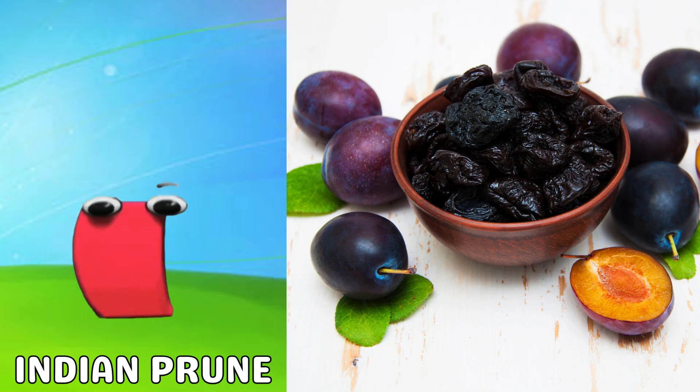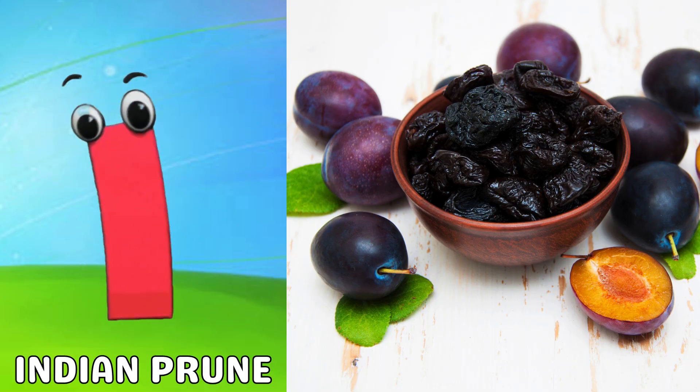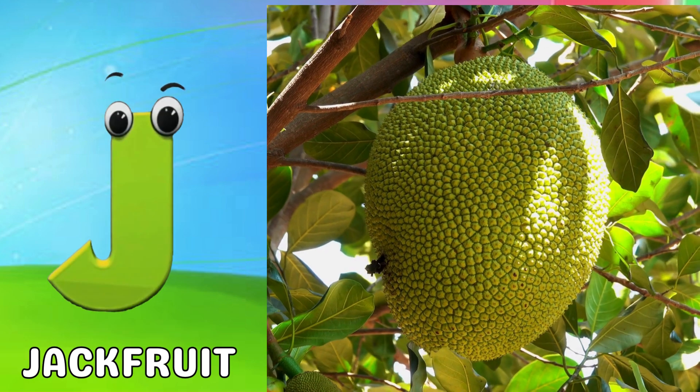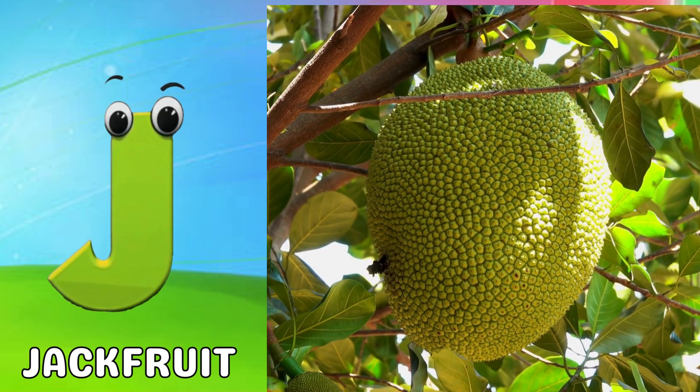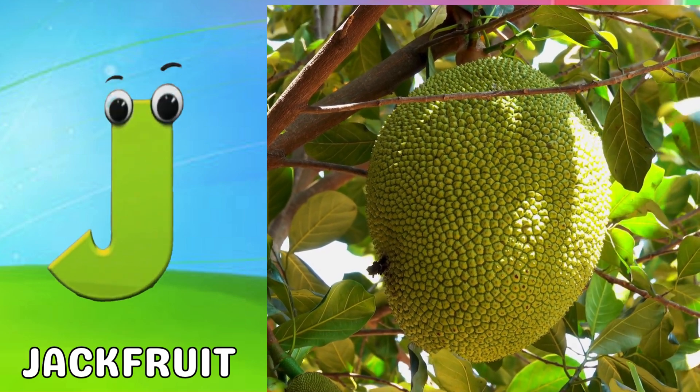I is for Indian prune, i-i-Indian prune. J is for jackfruit, j-j-jackfruit.